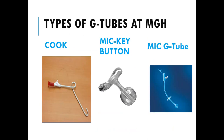The second type is called the Mickey Button, also known as a low-profile G-tube. The Cook Tube sticks out of the abdomen, while the Mickey Button lies flush against it and is smaller. The Mic G-tube is another option being incorporated at Mass General — a combination of the look of a Mickey Button and the structure of a Cook Tube. These tubes have different ways to secure, such as a balloon or a pigtail. We can show these to patients at clinic to help determine which one is right for you, though the final say rests with the surgeon based on anatomy and surgical history.